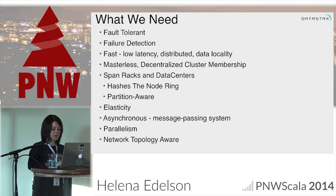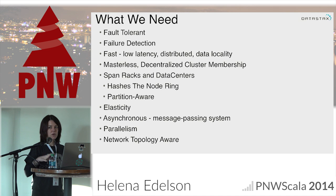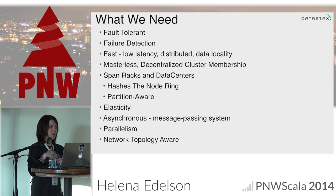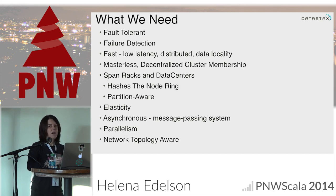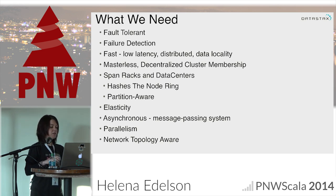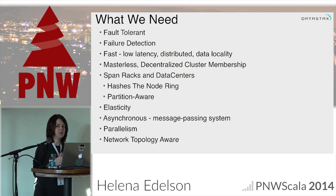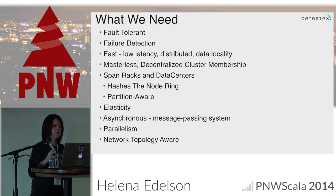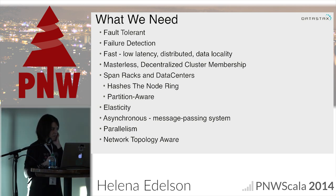We also want a masterless system, which Cassandra and Akka cluster have — they both use a Dynamo style. Cassandra and Akka cluster use the gossip strategy throughout the node ring, which is how it reaches consensus on the status of all nodes — which nodes are members, up, downed, or unreachable. We also need to span racks and data centers; Cassandra has this built in, which many NoSQL databases do not. Spark, Cassandra, and Akka cluster all do partition awareness through hashing, and most of them use MurmurHash.